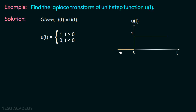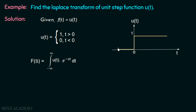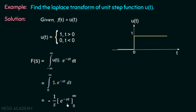We will now calculate the Laplace domain for this function. The expression is F(s) equal to the integral from minus infinity to infinity of f(t) multiplied by e to the power minus st dt. Replacing f(t) by u(t): since u(t) equals 0 for t less than 0, the integral from minus infinity to 0 becomes 0, and for t greater than 0 the function value is 1. So the limits change from 0 to infinity, and we need to integrate e to the power minus st, which equals minus 1 over s times e to the power minus st, evaluated from 0 to infinity.